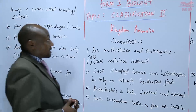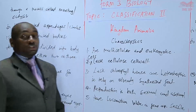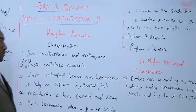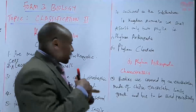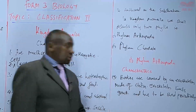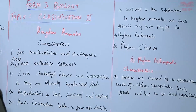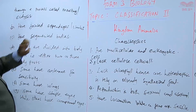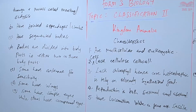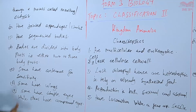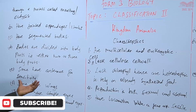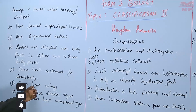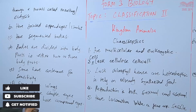Those are the characteristics used to place animals into the Phylum Arthropoda: they have a hard external exoskeleton made of chitin that is shed periodically during molting or ecdysis; they have jointed appendages and segmented bodies divided into two or three body parts; some have antennae for sensitivity while others do not; some have wings; and some have simple eyes while others have compound eyes.